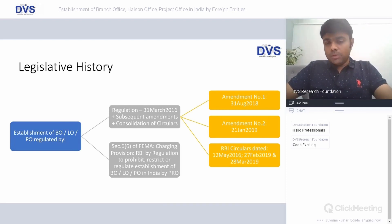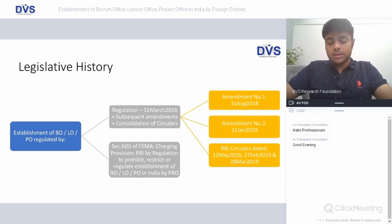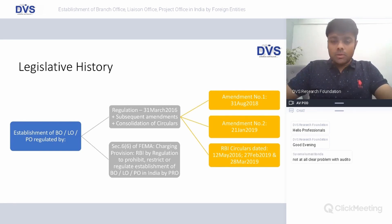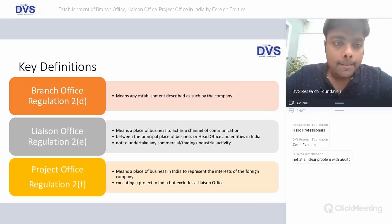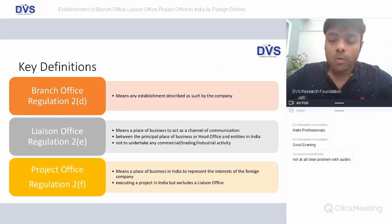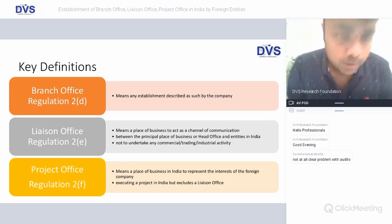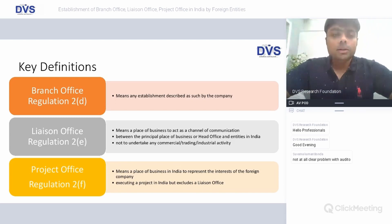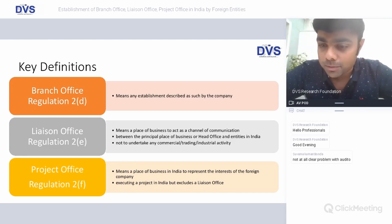Three important regulatory amendments in the last two to three years have been of relevance, beginning from 2018, along with circulars which we have mentioned. Now, what is a branch office, and what is a liaison office and a project office?